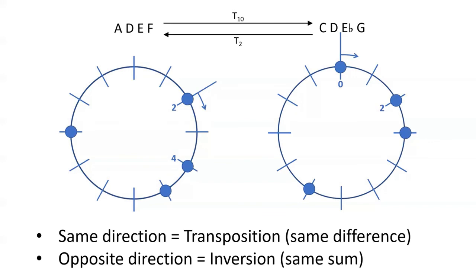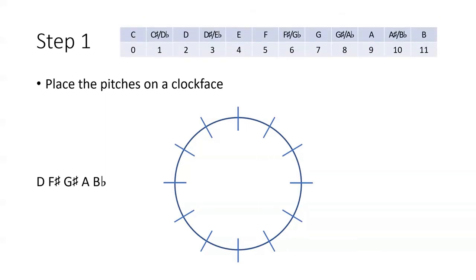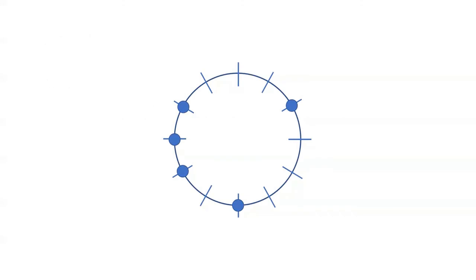Let's practice finding the prime form of a new example. This time we'll try a five-note collection: D, F-sharp, G-sharp, A, B-flat. Here's the PC integer cheat sheet if you need it. Pause the video and see if you can draw a clock face with the dots in the correct locations. D is 2, F-sharp is 6, G-sharp is 8, A is 9, and B-flat is 10. In step 2, we measure the distance around to the last PC for each possible starting place in both directions. Draw two arrows for each dot and put the correct number on each of the 10 arrows. Here are the first-to-last distances you should have gotten.